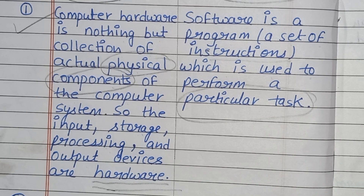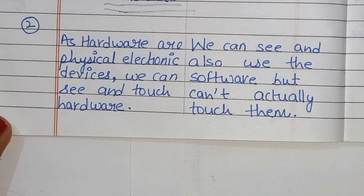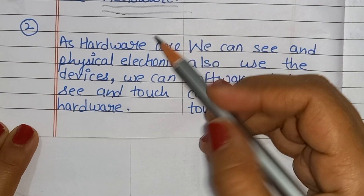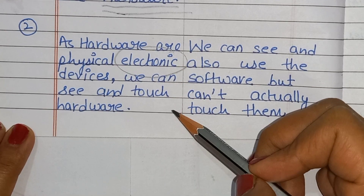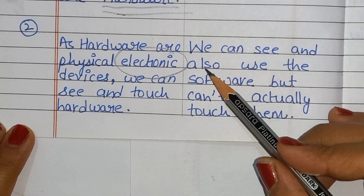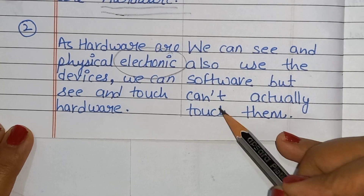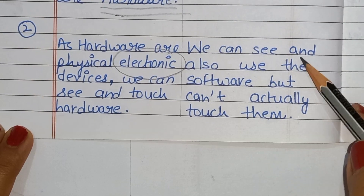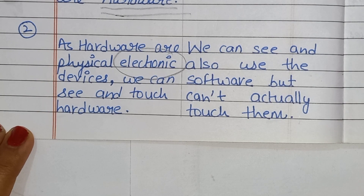Next difference: as hardware are physical electronic devices, we can see and touch hardware. Ab hardware jo hai, ek physical electronic device hai, jise hum dekh bhi sakti hai aur touch bhi kar sakti hai. Lekin hum software ko touch nahi kar sakti hai. We can see and also use the software, but can't actually touch them.